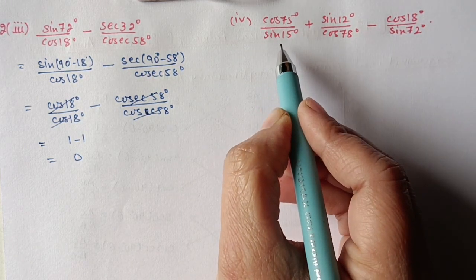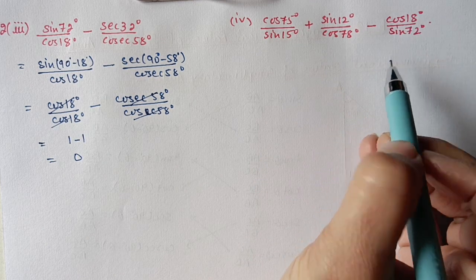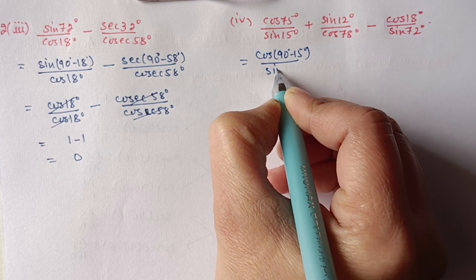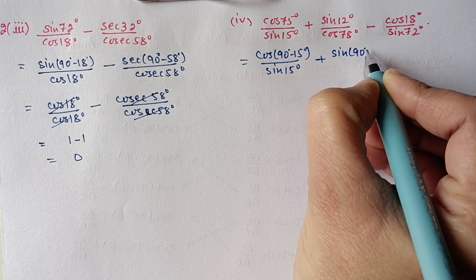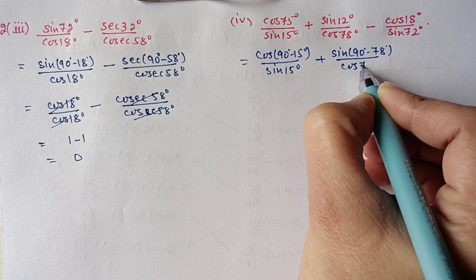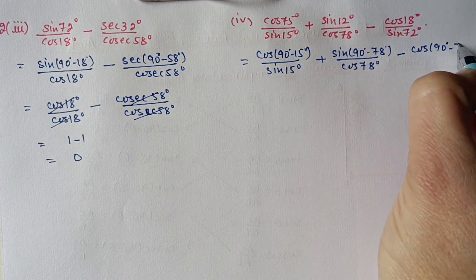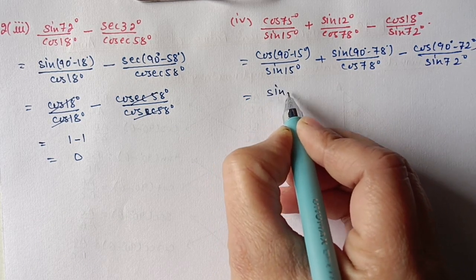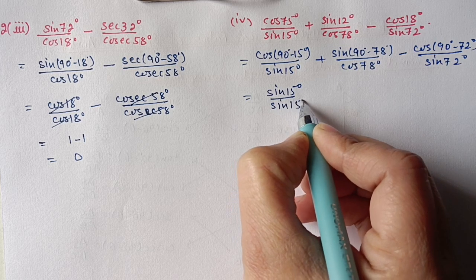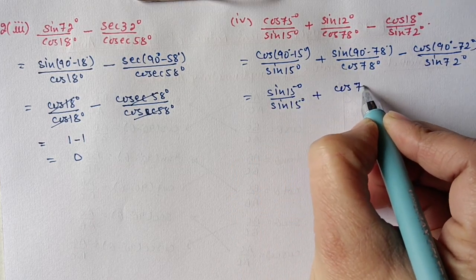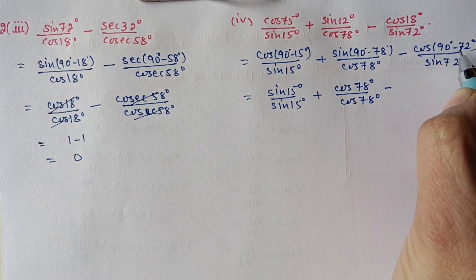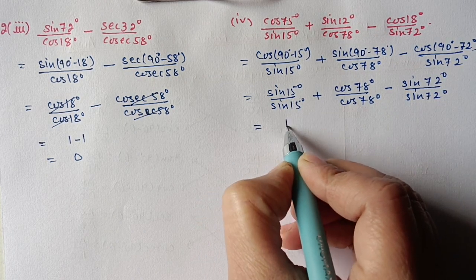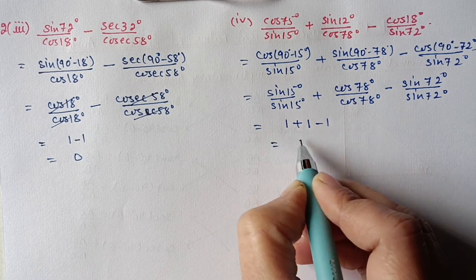Fourth part: cos 75° / sin 15° + sin 12° / cos 78° − cos 18° / sin 72°. Write cos 75° = cos(90° − 15°) = sin 15°, giving the first term = 1. Write sin 12° = sin(90° − 78°) = cos 78°, giving the second term = 1. Write cos 18° = cos(90° − 72°) = sin 72°, giving the third term = 1. Final answer: 1 + 1 − 1 = 1.